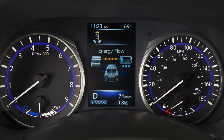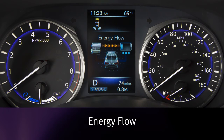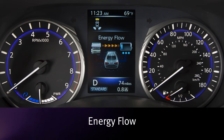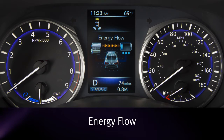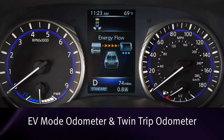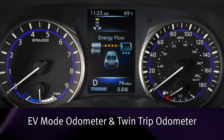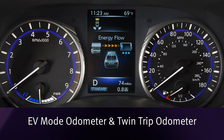Additional HEV-specific trip computer items include energy flow, which displays the energy flow related to the hybrid system. The energy monitor is also shown on the upper touchscreen display. EV mode odometer and twin trip odometer indicate the total distance traveled and the distance of two individual trips while using the electric motor only.